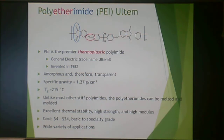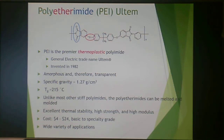Ultem is amorphous and therefore transparent. It has a moderate density, and its Tg is 215°C. Unlike some really stiff polyimides, this particular polyetherimide can be melted and molded at a more reasonable temperature. It has excellent thermal stability, high strength, and high modulus. It also has high cost — $4 to $24 per pound, depending on whether you're at basic or specialty grades — but it has a wide range of applications, usually in the aerospace industry.